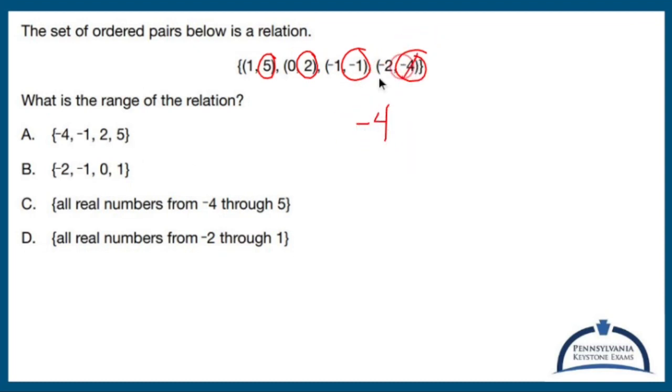Least to greatest is -4, then -1, then 2, then 5, which is the range—the y values. That's all I have to do. Don't overthink it.